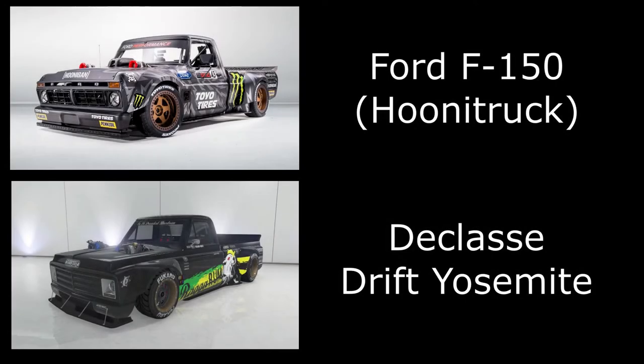Next we have the Drift Yosemite — this is Ken Block's drift Ford F100 pickup, commonly known as the Hoonie truck. It's a pretty cool vehicle in real life and I'm glad Rockstar added it to GTA Online. A lot of people don't like the Drift Yosemite, but it's one I quite like. The Drift Yosemite is actually based on a Chevy C10 and the Hoonie truck is a Ford F100, but as you can see from the photos, it's quite obviously based off the Hoonie truck.